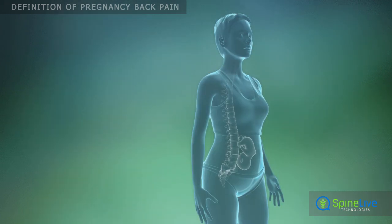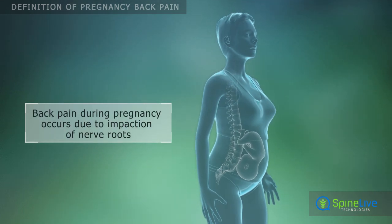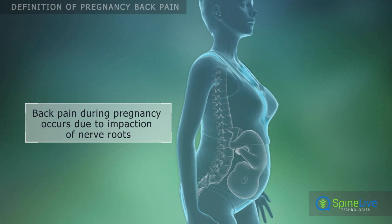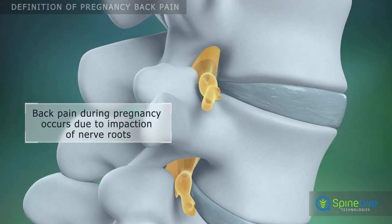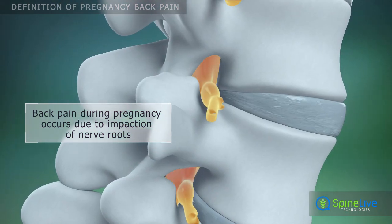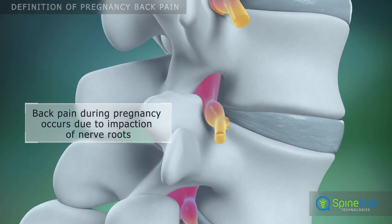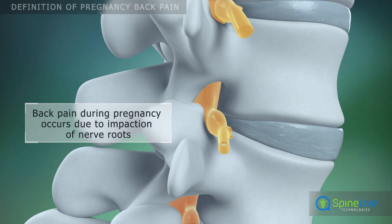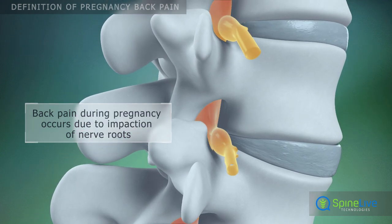Back pain during pregnancy occurs due to strain on the back from the growing uterus and weight gain. Spinal deformity in the lumbar region causes constriction of the intervertebral foramen and impaction of nerve roots.